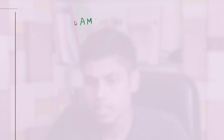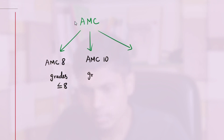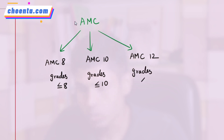The AMC exam is conducted in three types. One is AMC 8, which is meant for grades less than or equal to 8. Next comes AMC 10, for grades less than or equal to 10. And then AMC 12, for grades less than or equal to 12.